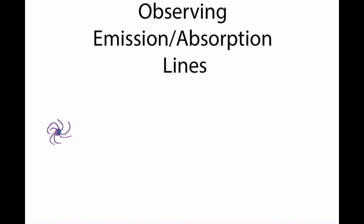Today we're going to discuss observing emission and absorption lines in an astronomical context. Suppose I have a galaxy back here which is emitting a whole bunch of different kinds of photons — some might be blue, some red, some green. The basic idea is we have some kind of a backlight that emits photons at a whole range of colors or frequencies.